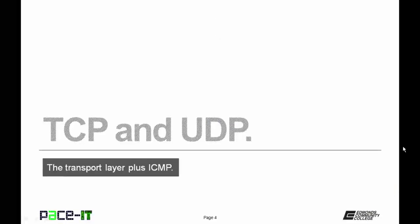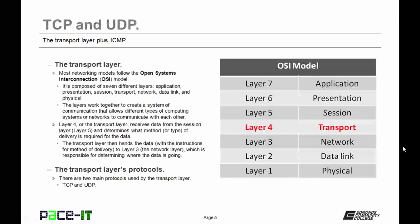I'm going to begin by talking about TCP and UDP. Before I can talk about TCP and UDP, we need to talk about the transport layer. Most networking models follow the Open Systems Interconnection Reference Model, or the OSI model. It is composed of seven different layers, which include the application, presentation, session, transport, network, data link, and physical layers. The layers work together to create a system of communication that allows for different types of computing systems or networks to communicate with each other.